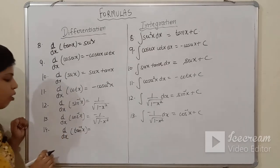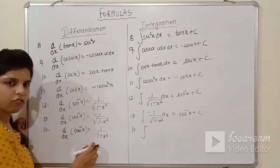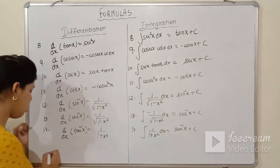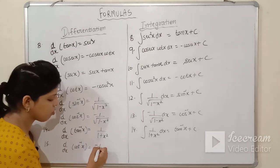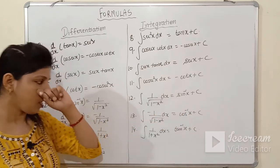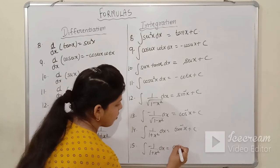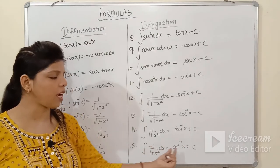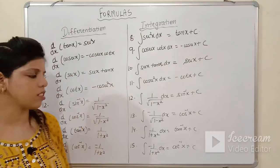The derivative of tan⁻¹x is 1/(1+x²), so the integration of 1/(1+x²) dx = tan⁻¹x + C. The derivative of cot⁻¹x is −1/(1+x²), which is just the negative. So the integration of 1/(1+x²) dx = tan⁻¹x + C, or equivalently the integration of −1/(1+x²) dx = cot⁻¹x + C. Please note down all these formulas.